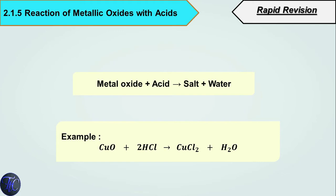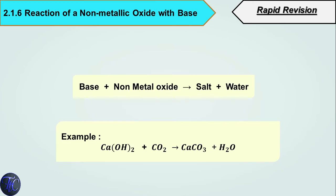Now let's see what happens when a metallic oxide reacts with acid. Metal oxide plus acid produces salt and water, which is similar to a neutralization reaction. For example, copper oxide reacting with hydrochloric acid produces copper chloride (salt) and water.